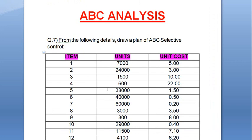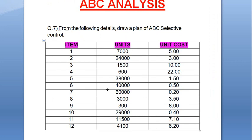There is one small practical question. From the following details, draw a plan of ABC selective control. Items one through twelve are given with their units — 7,000; 24,000; 1,500; 600; 38,000; 40,000 units and so on. We have to determine which items belong to the A store, which to B, and which to C.